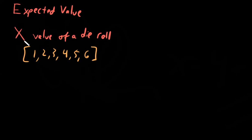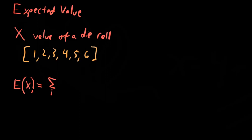The formula for this is pretty simple. For a discrete random variable like we have here, the formula for the expected value — you write it as E(x) — is equal to the sum over all the values that the distribution can take on, times the probability that that particular value occurs.